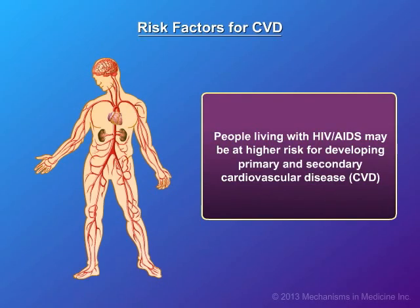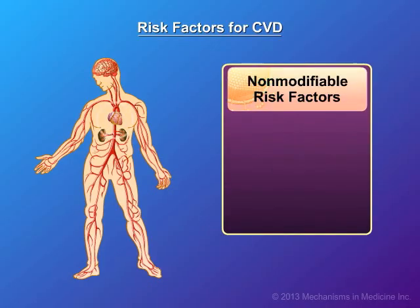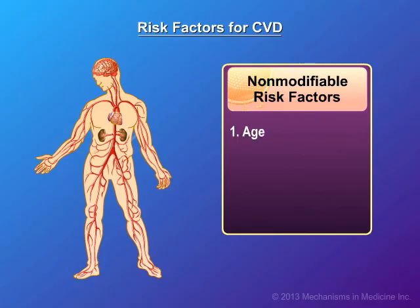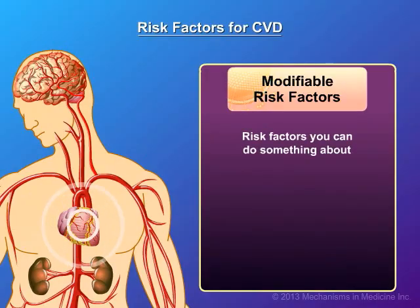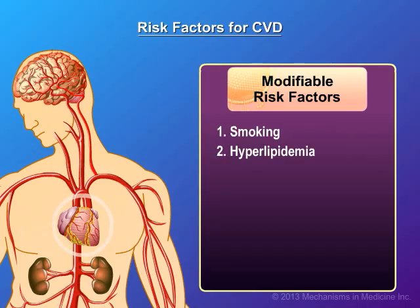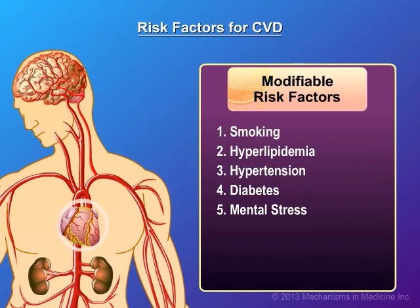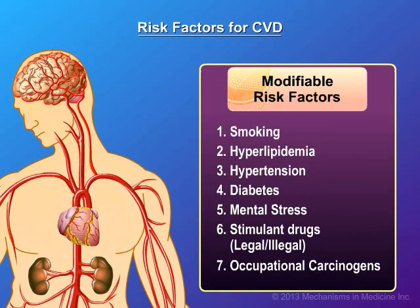People living with HIV or AIDS may be at higher risk for developing primary and secondary cardiovascular disease. Non-modifiable risk factors include age, gender, ethnic origin, and socioeconomic position. Modifiable risk factors are risk factors you can do something about, and include smoking, hyperlipidemia, hypertension, diabetes, mental stress, stimulant drugs legal or illegal, and occupational carcinogens.